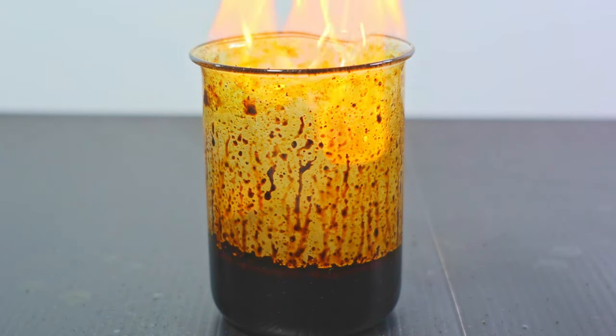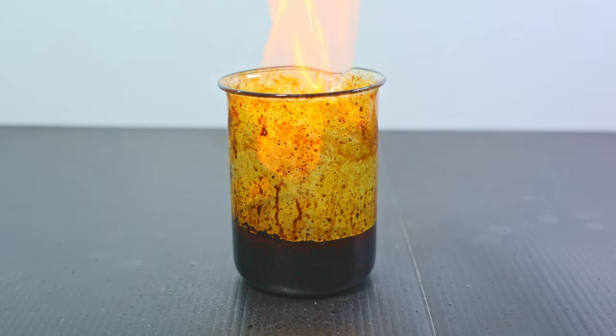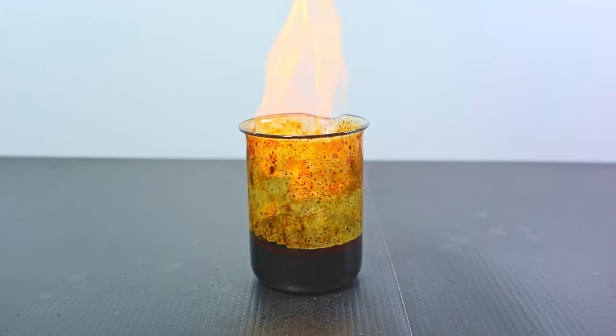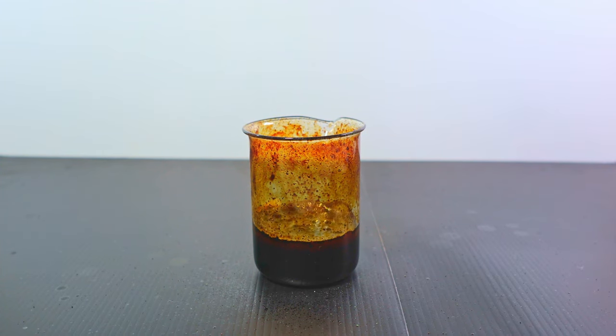Contrary to popular belief, chromic acid isn't really a proper acid but a mixture of sulfuric acid and chromate salts, in this case sodium dichromate. Nevertheless, it is still very oxidizing to organic compounds, as you'll soon see.